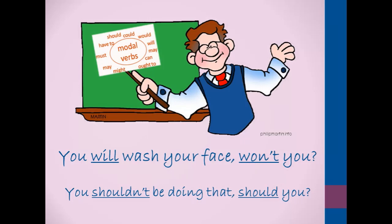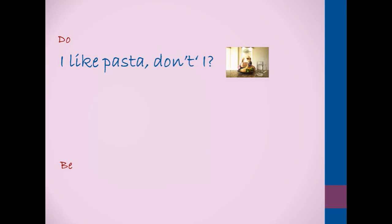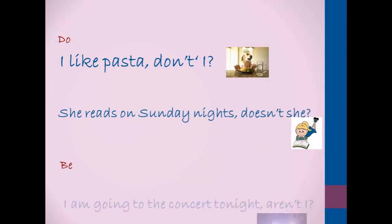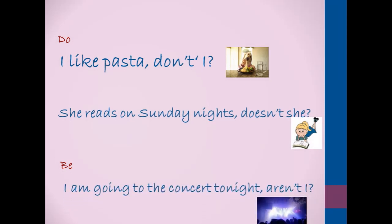There are a couple more rules to remember when using question tags with 'do' or 'be.' In positive sentences, we often leave 'do' out — it is not common to say 'I do like pasta'; instead we say 'I like pasta, don't I?' For the verb 'be,' for example: 'I am going to the concert tonight' — it wouldn't work to say 'am not I?' So in this case, the question tag would be 'aren't I?'